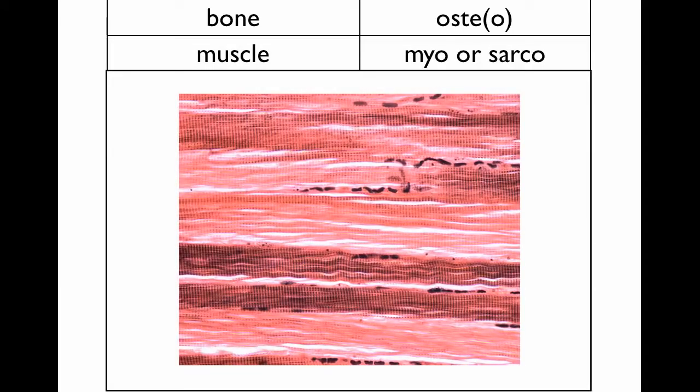When you see myo or sarco, that refers to muscle. All different types of cell structures within muscle you're going to see with myo or sarco. For example, you'll see the sarcomere, the sarcoplasmic reticulum, myofibers or myofibrils — all of those relate to muscle. Almost all specialized muscle structures use myo or sarco, usually in the prefix.